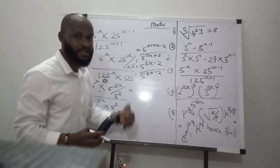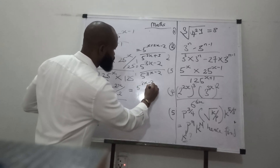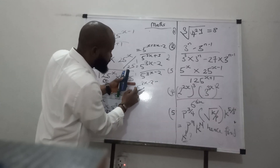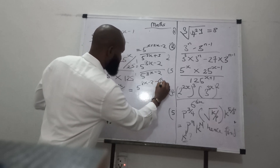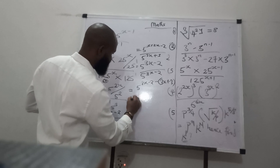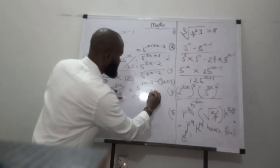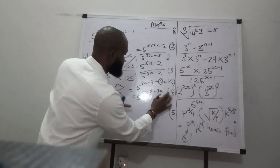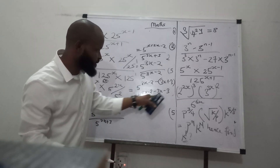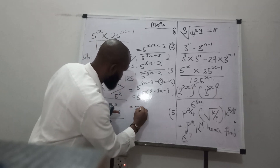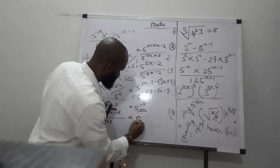Remember in indices, division means subtraction. So we can say, simplifying with the same base, we can say 5 raised to the power of 3x minus 2, subtracted by 3x minus 3. So this gives us 5 raised to the power of 3x minus 2 minus 3x minus 3. Therefore, 3x minus 3x cancels. So we have 5 raised to the power of minus 2 minus 3, which gives us minus 5. So our answer becomes 5 raised to the power of minus 5.